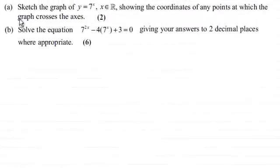Hi there. Now for the first part here we've got to sketch the graph of y equals 7 to the power x, for x being any real number, showing the coordinates of any points at which the graph crosses the axis for two marks. So if you'd like to have a go at this and haven't done it already, I'll just give you a moment to pause the video.